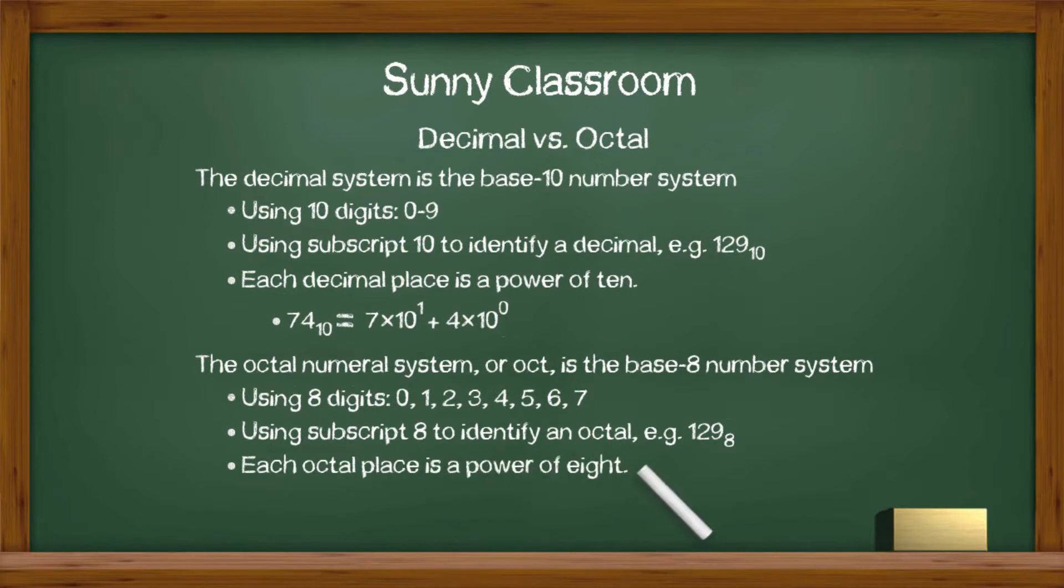Each octal place is power over 8. For example, the octal number 132 is 1 times 8 to the second power, plus 3 times 8 to the first power, plus 2 times 8 to the zero power.